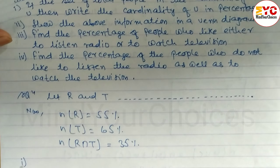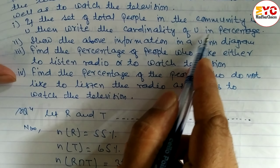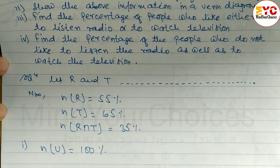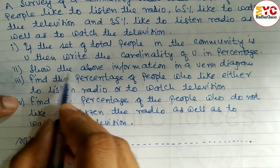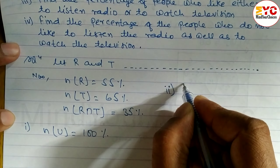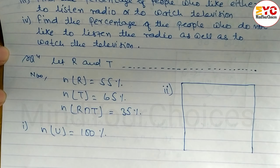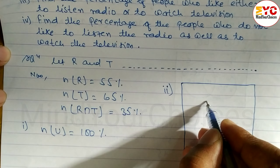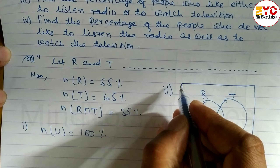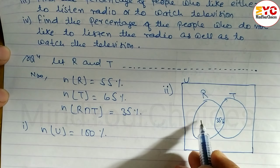Number 1: If the set of total people in the community is U, then write the cardinality of U in percentage. Since the question is in percentage, n(U) = 100%. Number 2: Show the above information in a diagram. We have two subsets — one for radio (R) and one for television (T). The intersection is 35%, so we write 35% in the middle.